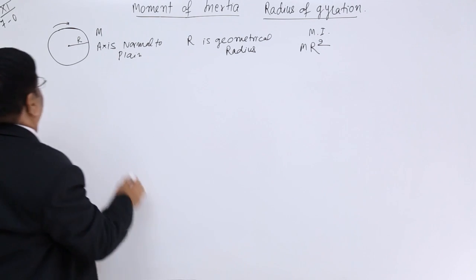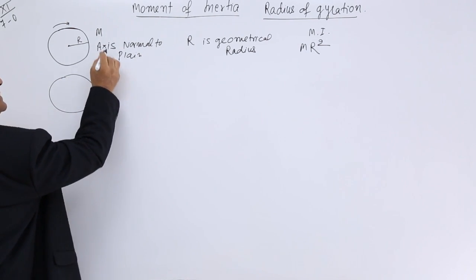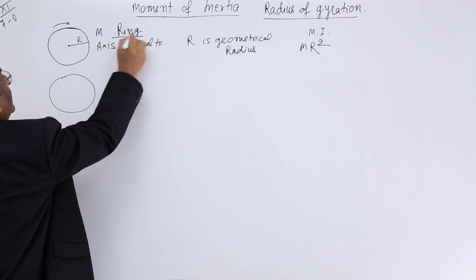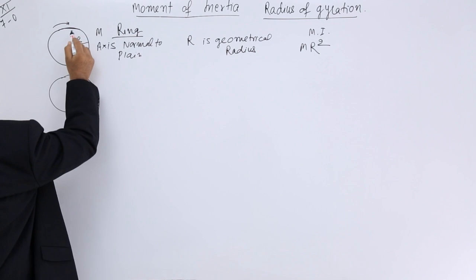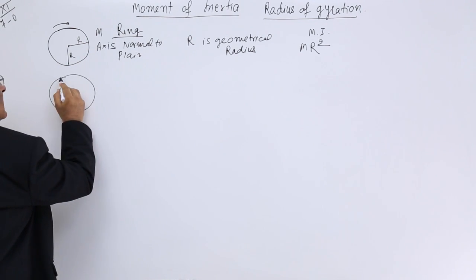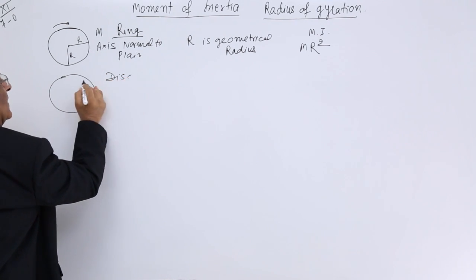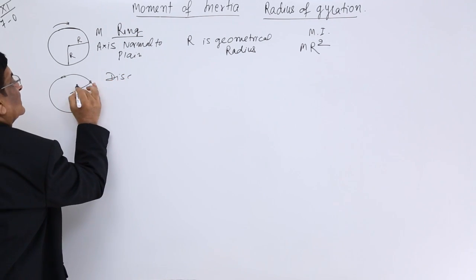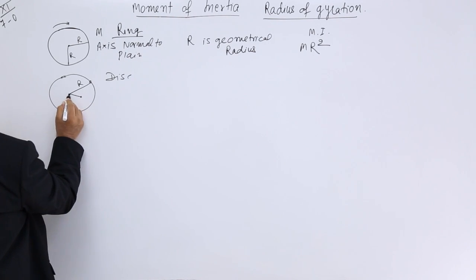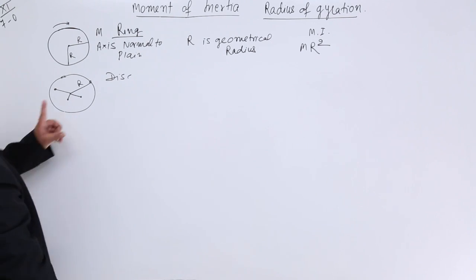Now see the second case. This is a disc. In the ring, every particle has radius equal to r. But here in the disc, every particle is not at distance r. There are particles which are at smaller distances than r.